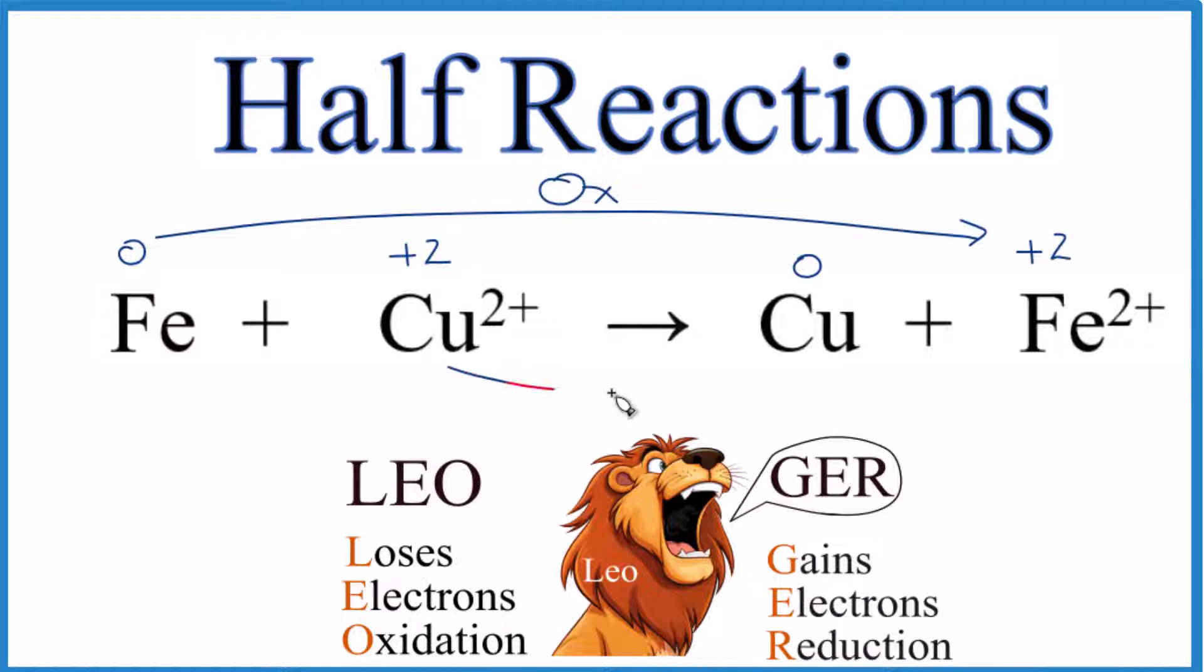Copper goes from plus two to zero. The number gets smaller, that's reduced. And you might remember our friend Leo, losing electrons, that's oxidation. We lost electrons.